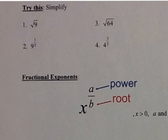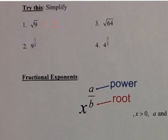Today we're going to talk about fractional exponents. Let's simplify the square root of 9, which equals 3. Now type into your calculator 9 to the one-half power — use the caret key, type 1/2, and hit equals. You should also get 3. So there is a relationship between these two.